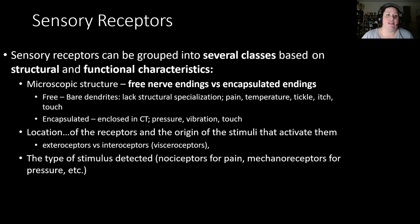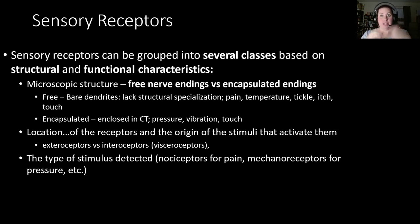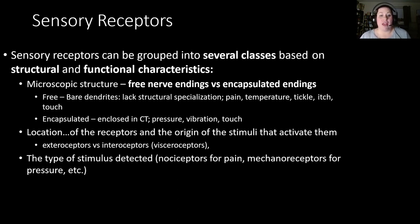Sensory receptors can be grouped into classes based on structural and functional characteristics. Structurally, they may have free nerve endings — bare dendrites lacking structural specialization — seen in pain, temperature, tickle, itch, and touch receptors. Or they may be encapsulated — enclosed in connective tissue — detecting pressure, vibration, and different types of touch.